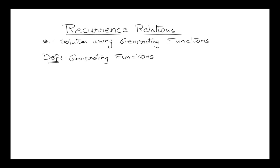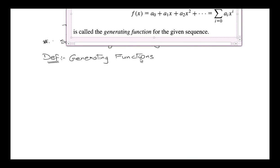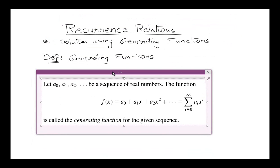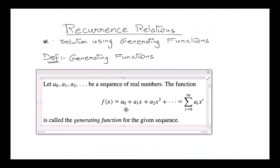What are generating functions? The definition of a generating function is: if we have a sequence a₀, a₁, a₂ of real numbers, then any function written as f(x) = a₀ + a₁x + a₂x² + a₃x³ + ... is called the generating function for the given sequence.